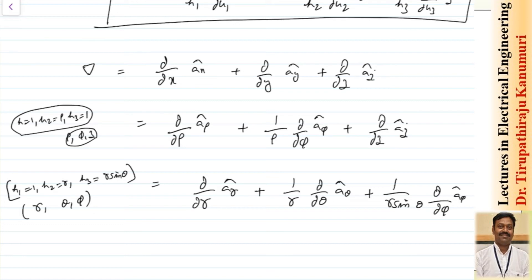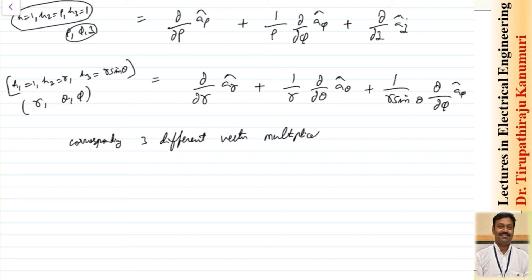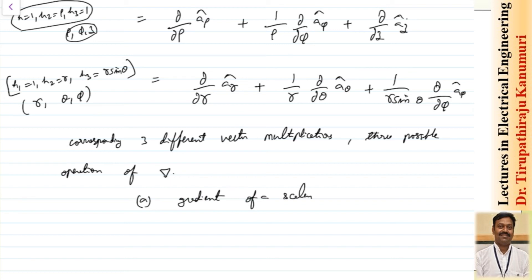Because we are remembering the curvilinear coordinate system, we are going to see multiple operators in the next class and those also can be calculated in an easier way. Depending on how you apply the del operator — whether on a scalar or a vector and in which manner — there are three possible operations. The first one is the gradient of a scalar; let us assume that scalar is f. The gradient of a scalar is represented by simply multiplying del with that scalar value, and the result will be a vector.